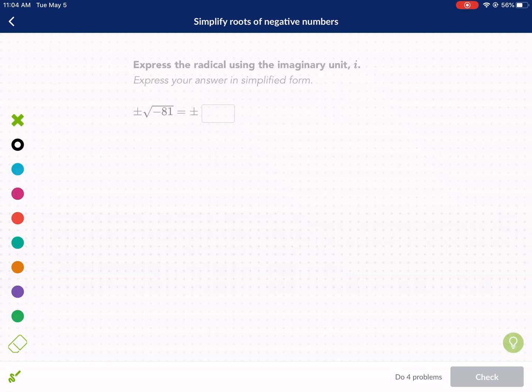So to understand what that means for taking roots of negative numbers, we need to understand the imaginary unit i. So that's what it says right here in the Khan Academy. So what is i? Well, i is represented by the square root of negative 1.